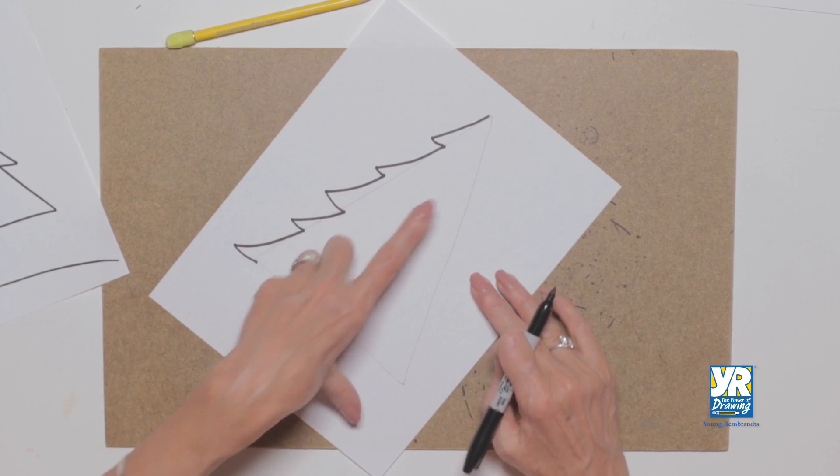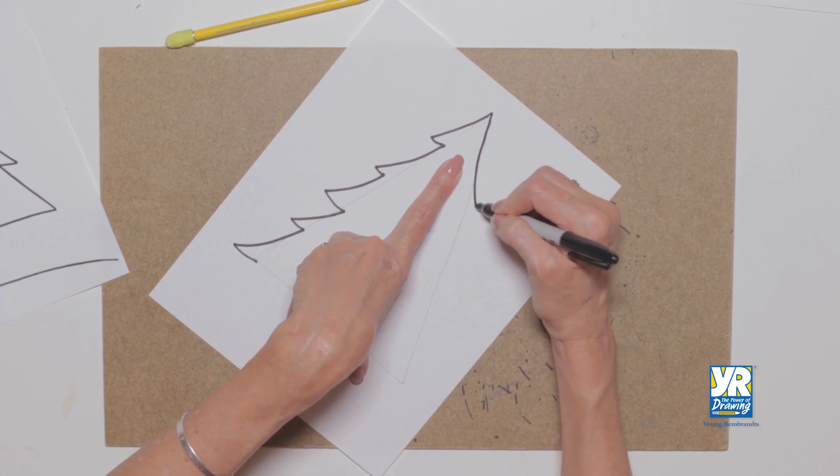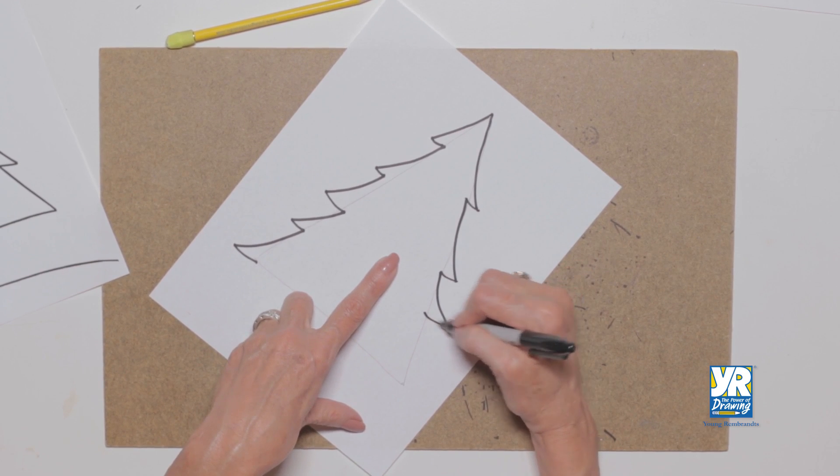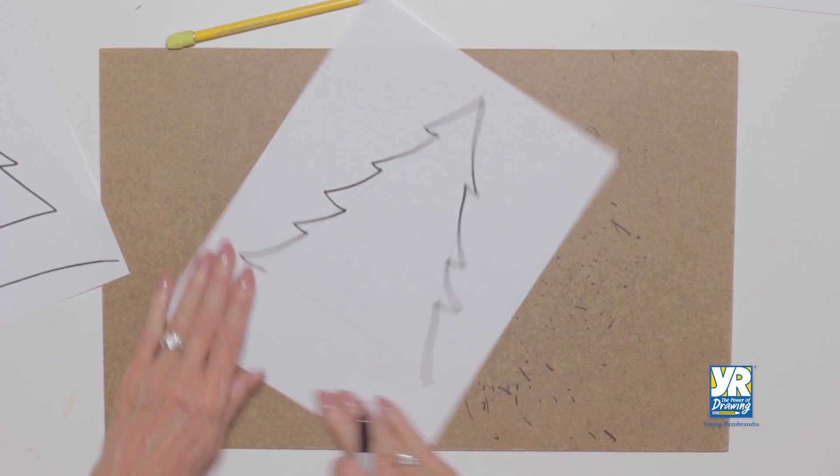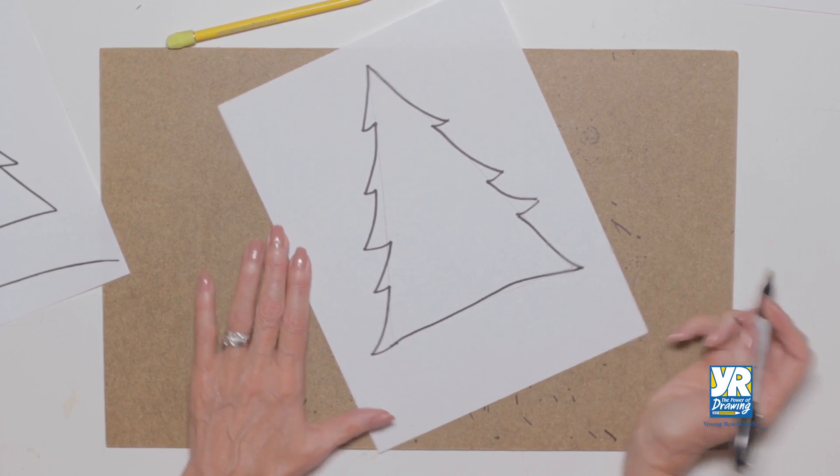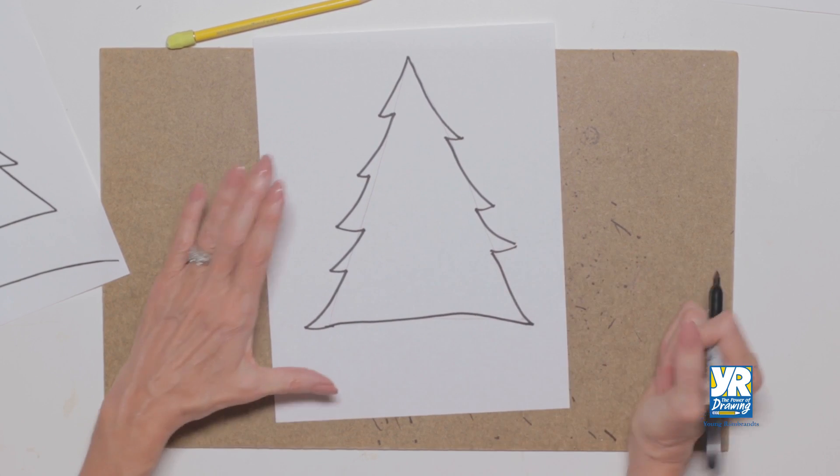Now on this side it doesn't have to be the same on both sides. It's going to look more natural if it's not. There. So now I'm going to have kind of an even, kind of uneven line across the bottom. So that's the basic of my tree.